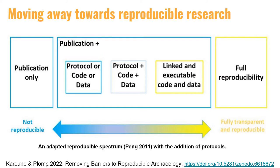Publishing research is changing. We are now moving away from standalone research articles that just present results, interpretations and conclusions. Research is moving towards being published in a reproducible manner. This means standalone articles are not sufficient. Our articles need to link to all outputs generated in research such as data, code and methods. This makes our work more comprehensible and aids reuse of data and other research outputs.